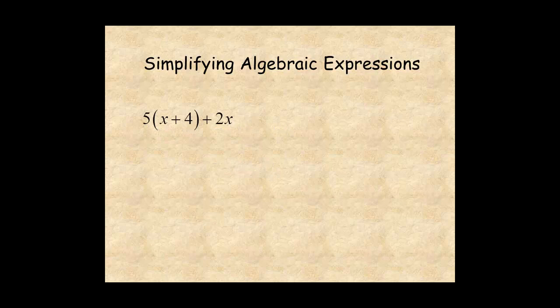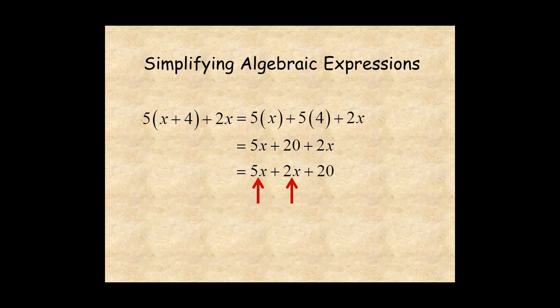In this final example, you simplify the expression by using the distributive property and combining like terms. First, use the distributive property to multiply 5 times x and 5 times 4, which equals 5x plus 20. Notice, the 2x term is still sitting there at the end. Next, rewrite the expression so the like terms are side by side. Then, add the coefficients of the two like terms, 5 plus 2, and you get 7x plus 20.